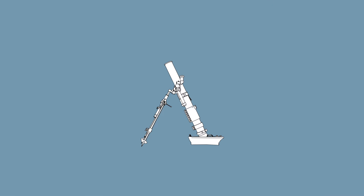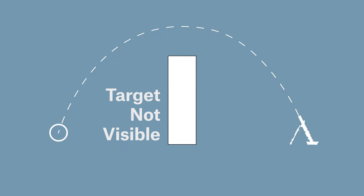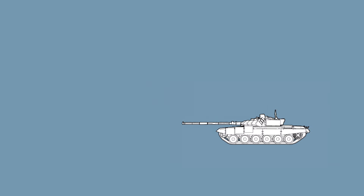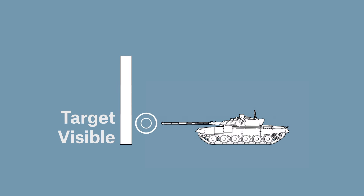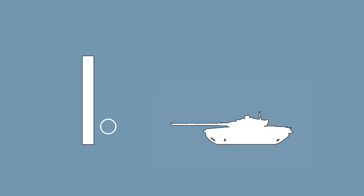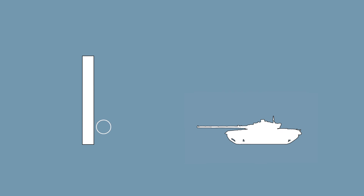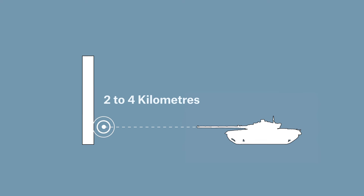Unlike mortars and artillery guns, which are most often used when the target is not visible, tank guns are direct fire weapons, used when a target is within the line of sight. They are designed for relatively short ranges, with the typical effective range of a tank gun being between 2 and 4 kilometres.